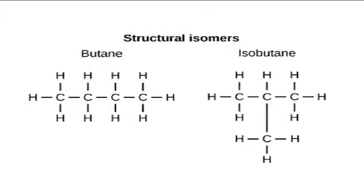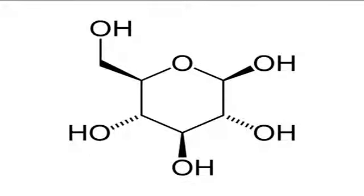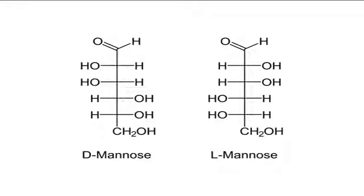Isomers are compounds having the same chemical formula but a different arrangement of atoms in the molecule. Other isomers of glucose have unique names, such as mannose and galactose. Chiral compounds exist in right-handed and left-handed forms, designated by the symbols D and L respectively — they are mirror images of each other. The L form and D form of mannose are shown in Figure 4 on your screen.